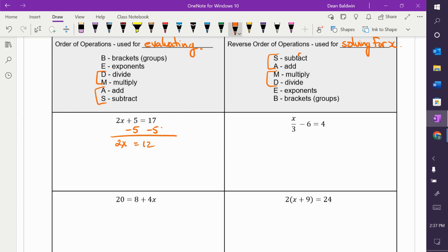Now, you got this. Then, SAMDEB says you do multiplication and division. So, is anything being multiplied or divided in what we have now? It's 2 times X. What's the opposite of multiplication? It is division. So, I divide both sides by 2. 12 divided by 2 is? 6.